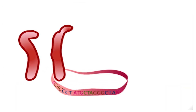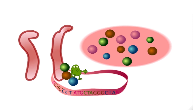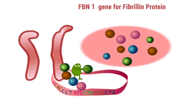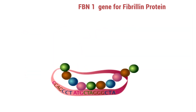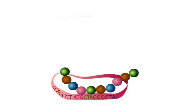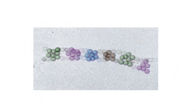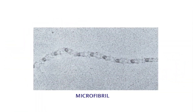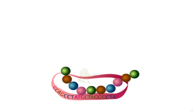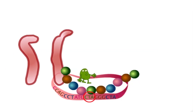Marfan syndrome is caused by a mutation in a single gene on chromosome 15. The gene is named FBN1, for the protein it encodes: Fibrillin-1. The gene produces many copies of the Fibrillin protein, and these join together to form a long stringy structure called a microfibril.